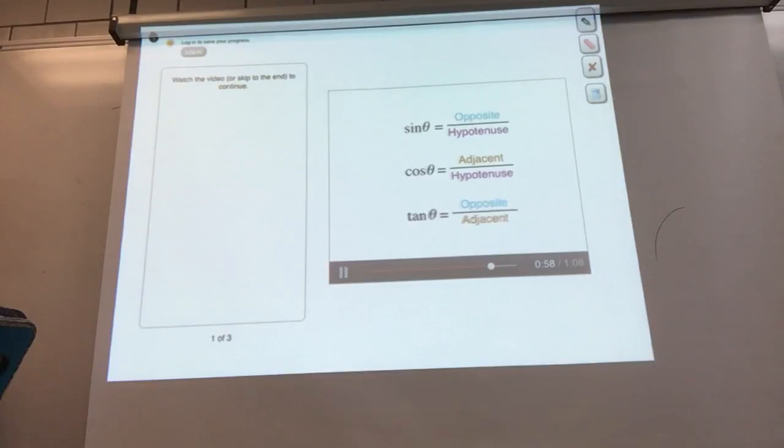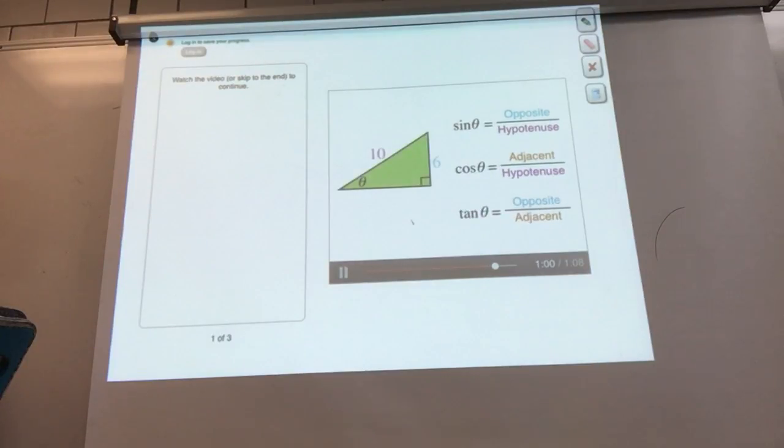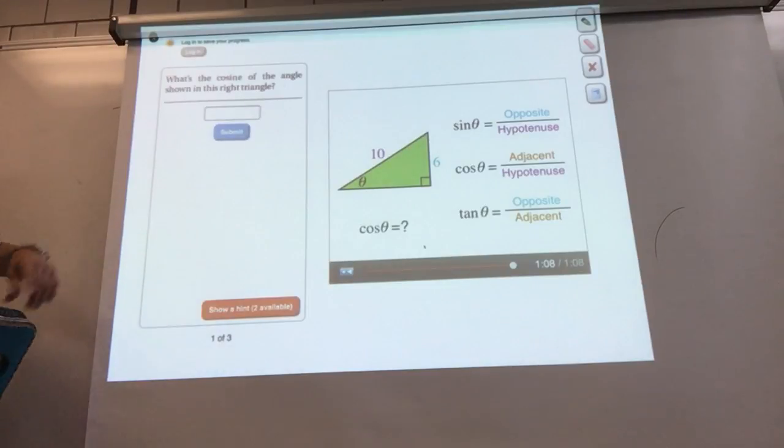The sine of angle theta is defined as opposite over hypotenuse. The cosine is adjacent over hypotenuse. The tangent is opposite over adjacent. Here are the definitions for the three trig functions. Say you have a right triangle with angle theta, opposite length 6, and hypotenuse length 10. What's the cosine of this angle?